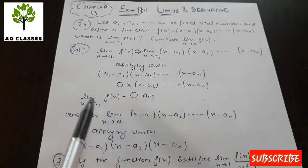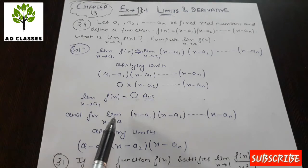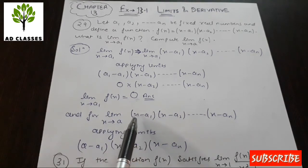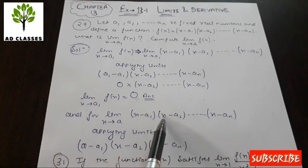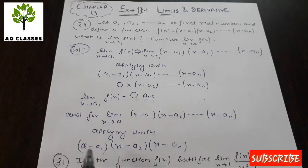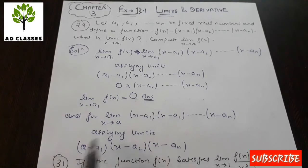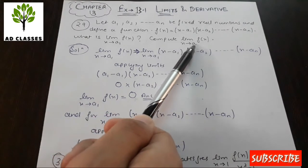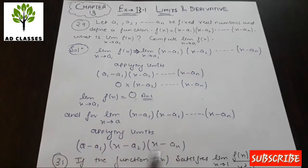For the second part, if the limit is taken as x tends to some value 'a' (not a1), then substituting x = a gives the value f(a) = (a - a1)(a - a2)...(a - an). This is the final answer when the limit value tends to a.